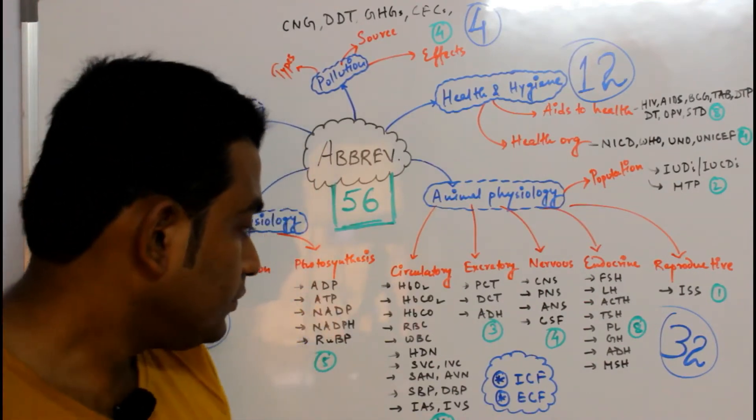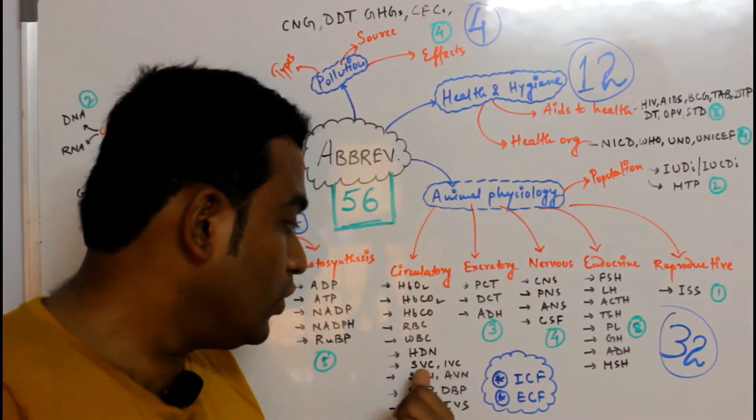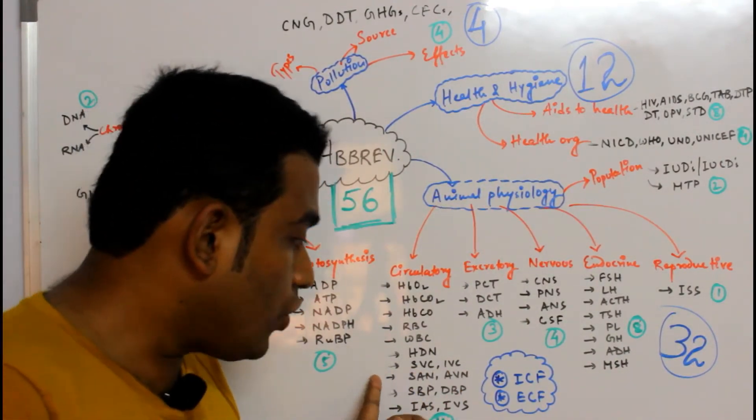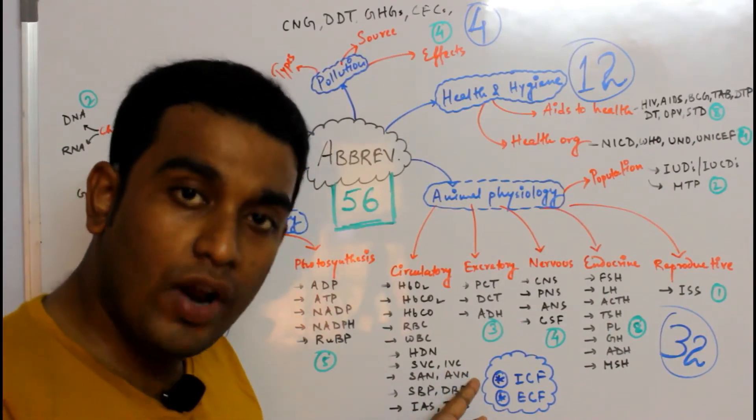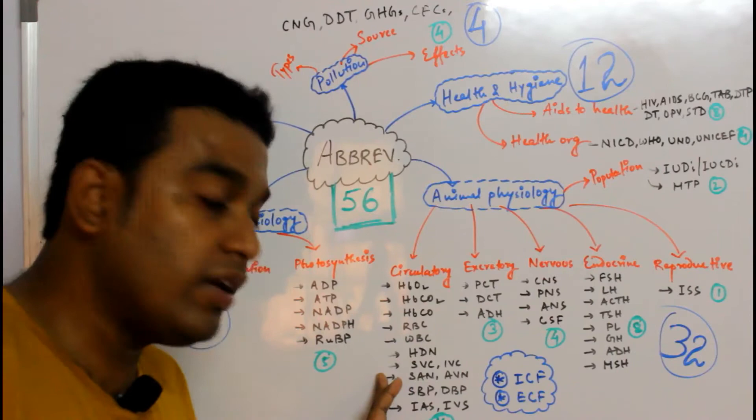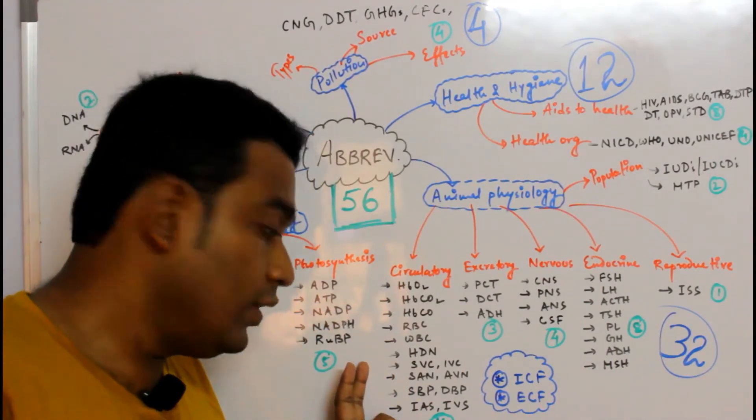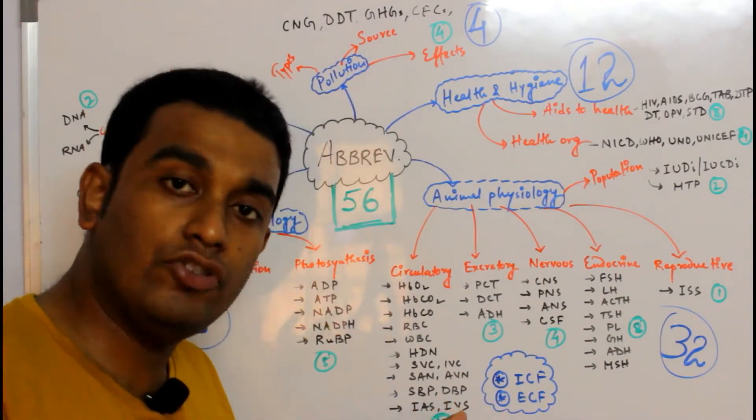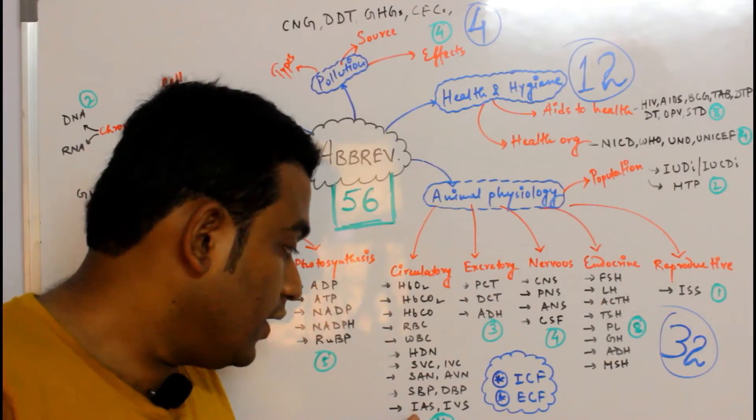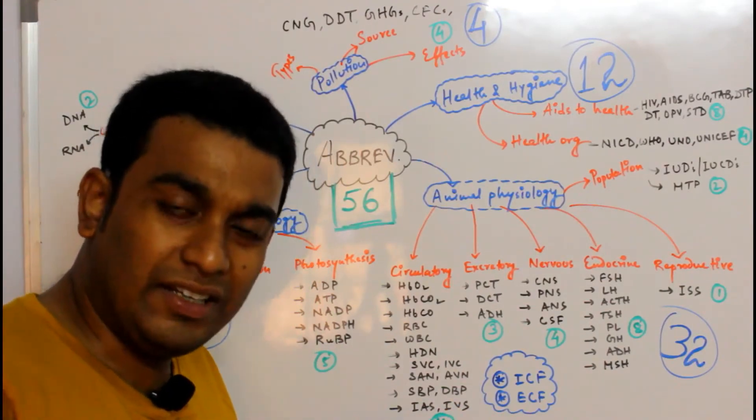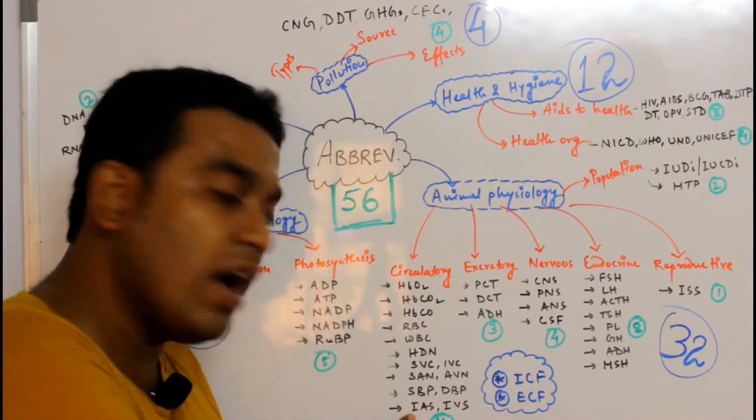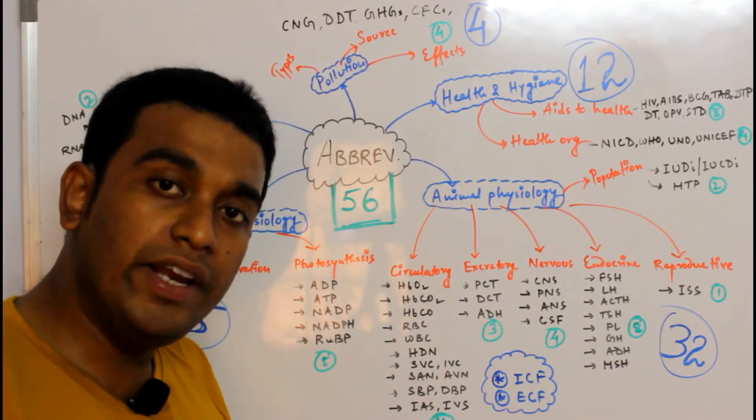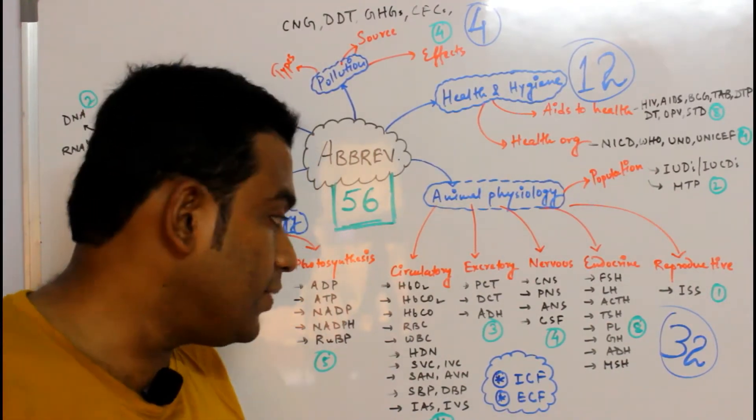We have SVC (Superior Vena Cava), IVC (Inferior Vena Cava), SAN (Sino Auricular Node), AVN (Auriculo Ventricular Node) associated with the conducting system of the heart, SBP (Systolic Blood Pressure), DBP (Diastolic Blood Pressure), IAS (Inter Auricular Septum), and IVS (Interventricular Septum).